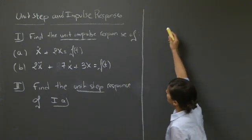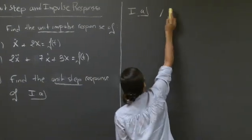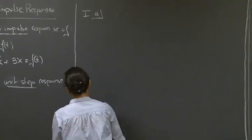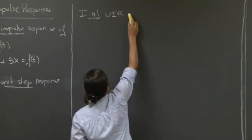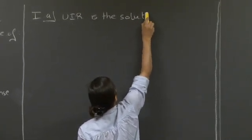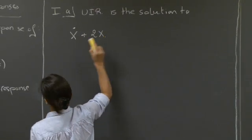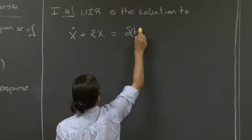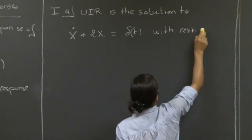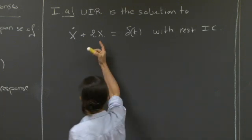Welcome back. So let's look at equation A. The unit impulse response is simply the solution to the following problem: our differential equation, x dot plus 2x that we're given, with the forcing in a delta function of magnitude 1, with rest initial conditions, which means in this case that x sub 0 minus is equal to 0.